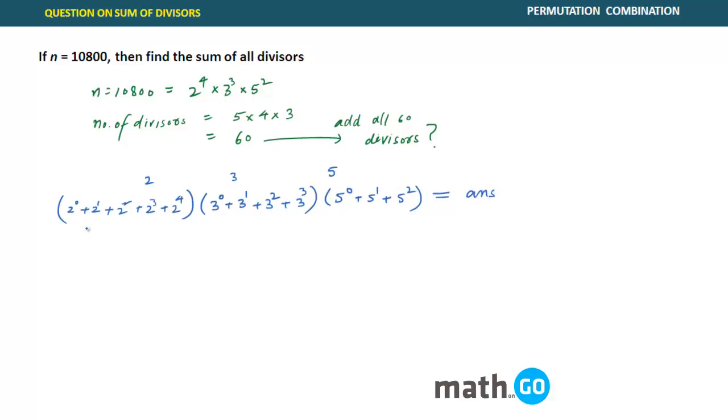Add all the powers of 2, multiply with adding all the powers of 3, multiply with adding all the powers of 5. If you see individually, all of them are geometric progressions. So just apply the formula for GP.